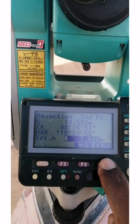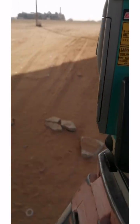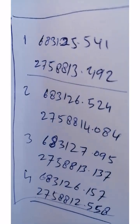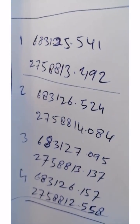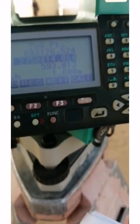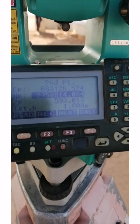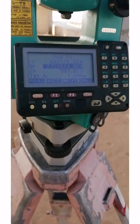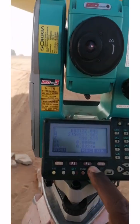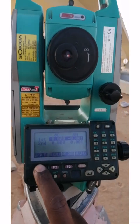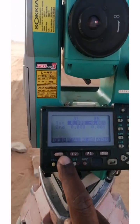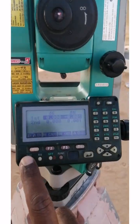Press yes and put your second point coordinates. I have the coordinates of point number two and I will enter them. I am satisfied, so now I will press calculation. Calculate, and you can see that these are the differences — there is no difference.